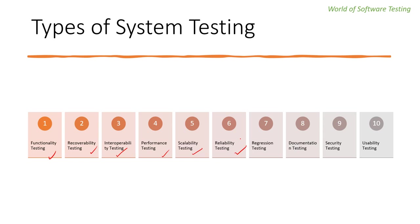The sixth type is reliability testing — to make sure the system can be operated for a longer duration without errors or failures. The seventh is regression testing — to make sure the system's stability as it passes through integration of different subsystems and maintenance tasks. The eighth is documentation testing — to make sure the system's user guide and other help topics and documents are correct and usable. The ninth is security testing — to make sure the system does not allow unauthorized access to data and resources. The tenth is usability testing — to make sure the system is easy to use, learn, and operate.